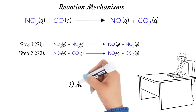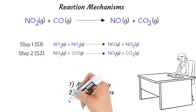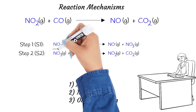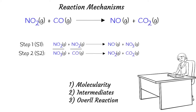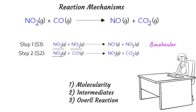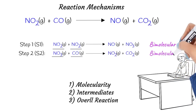Now let's consider how to determine the molecularity of the elementary steps, identify the intermediates, and write the overall reaction for the two-step mechanism. We can determine the molecularity of an elementary reaction by looking at the number of reactant molecules that participate in a given step. Molecularity can be unimolecular, bimolecular, trimolecular, and so forth. In this example, there are two NO2 molecules involved in step 1, so we consider the first step a bimolecular reaction. In step 2, an NO3 molecule reacts with a CO molecule — again two molecules involved — and therefore we call this step a bimolecular reaction.